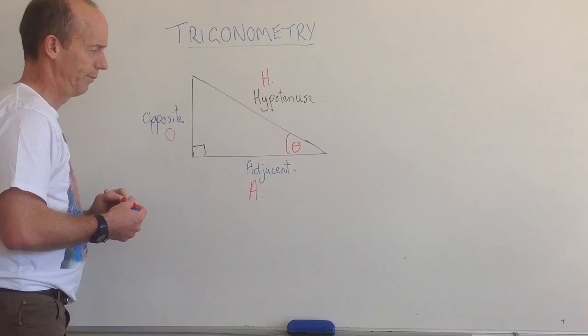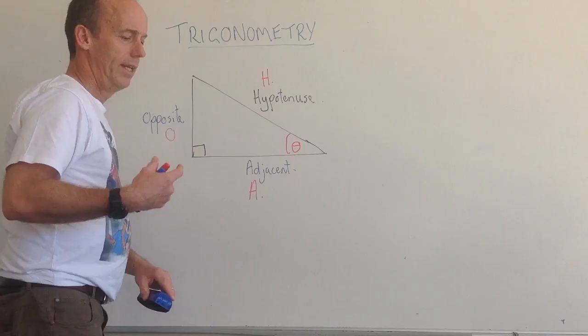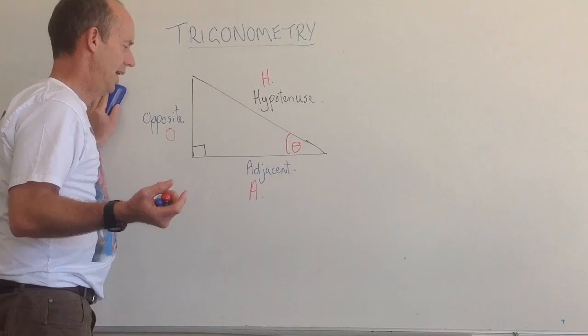And our first step in trigonometry is to be able to label those. Sometimes we just label those as H for hypotenuse, A for adjacent, and O for opposite.